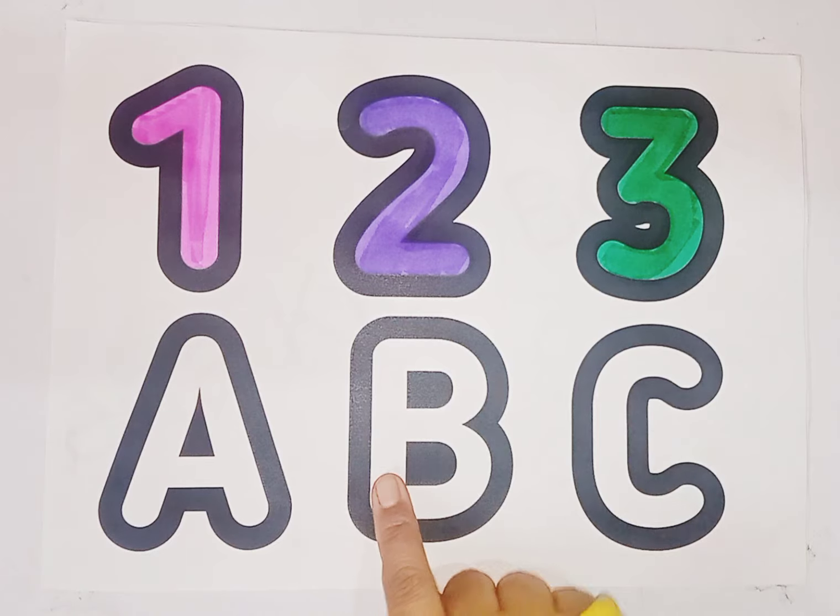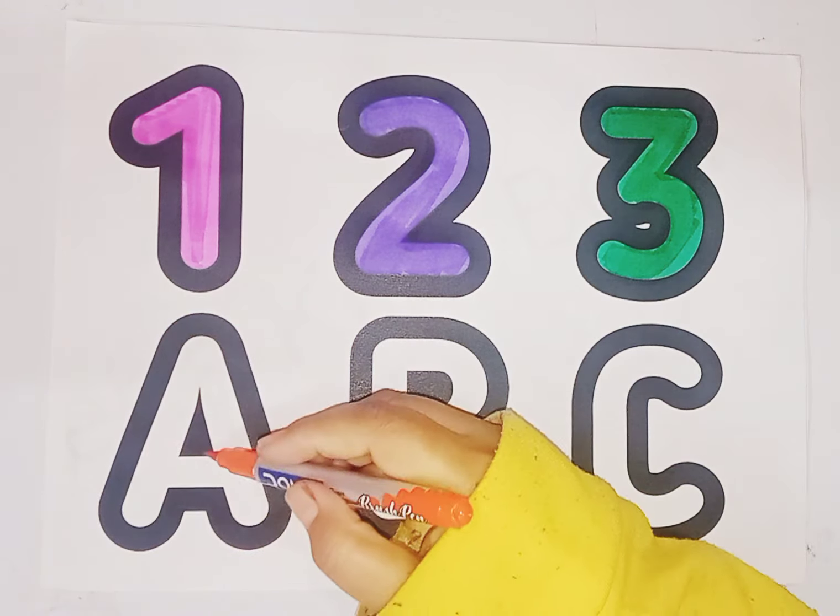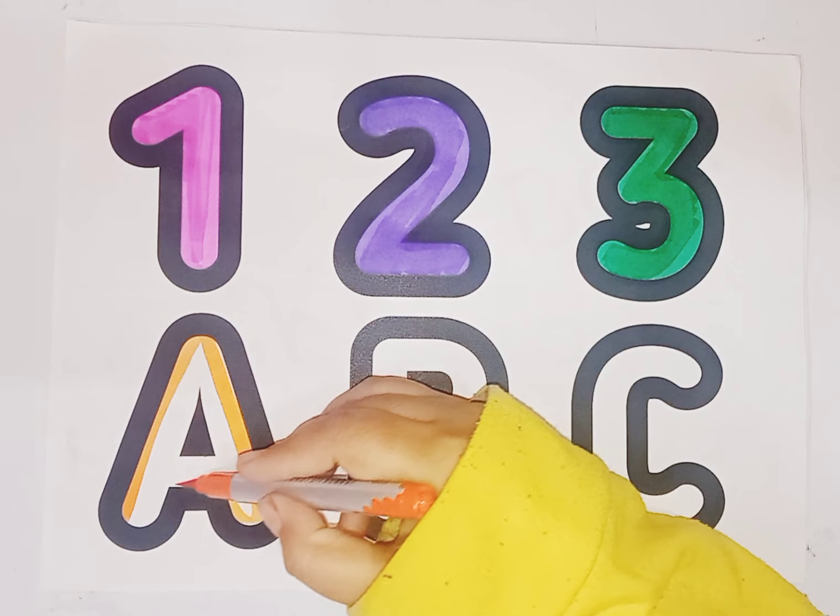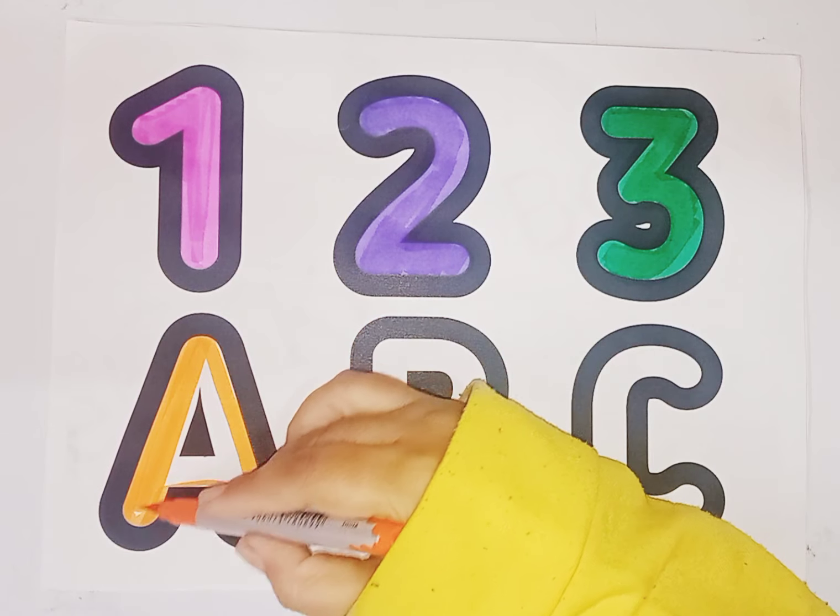Now we learn alphabets. This is orange color, alphabet A. A is for apple.